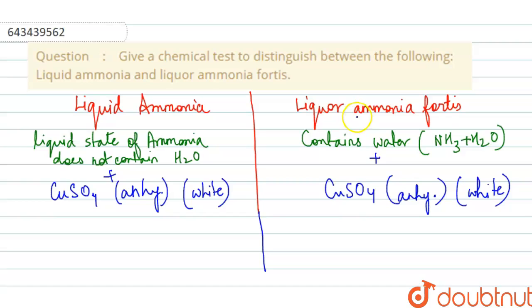So obviously liquor ammonia fortis that contains water will turn this copper sulphate blue because the water will react with CuSO₄ to form CuOH₂ that is blue. Or you can say it will form CuSO₄·H₂O. So copper sulphate will react with water to form CuSO₄·H₂O. That means water will be added, so it will turn blue, whereas liquid ammonia will not turn blue.